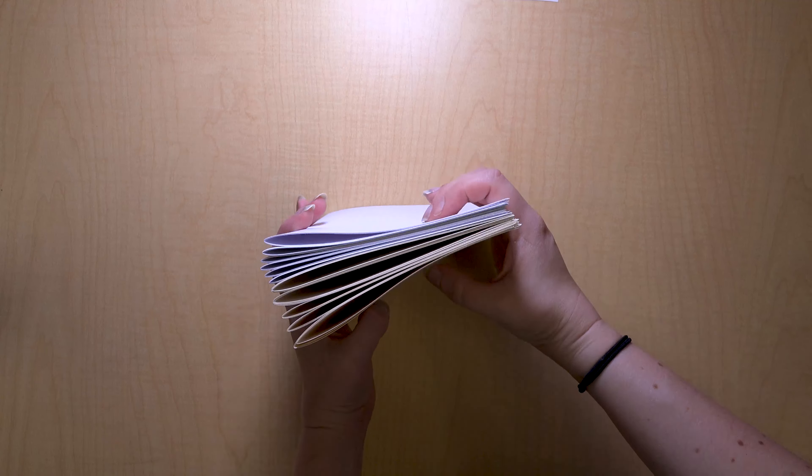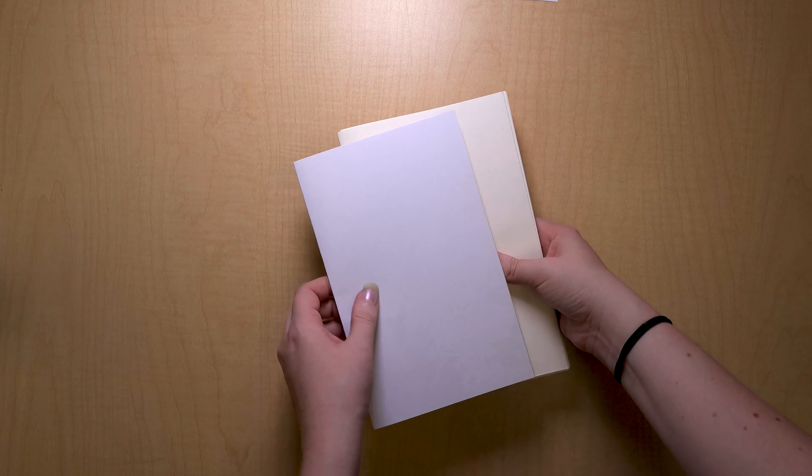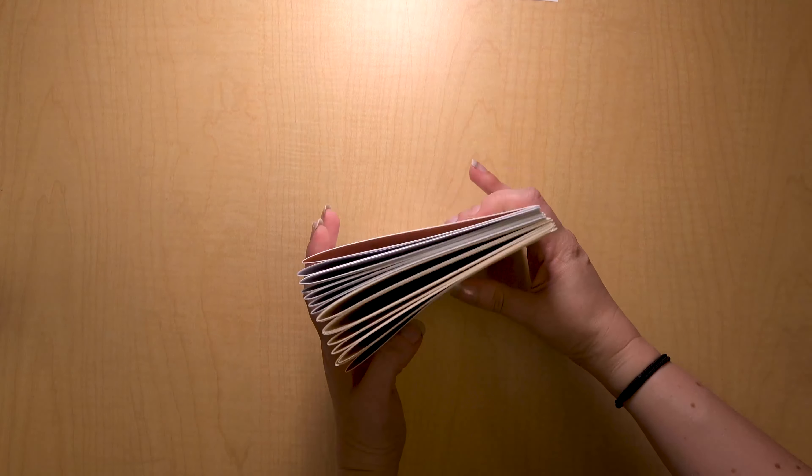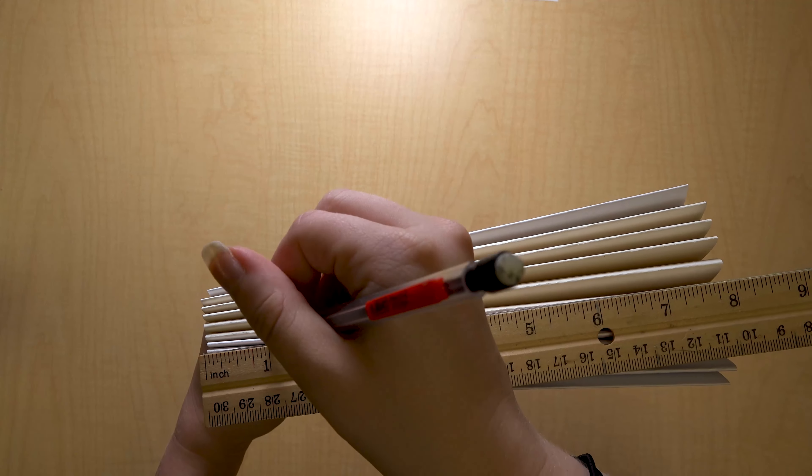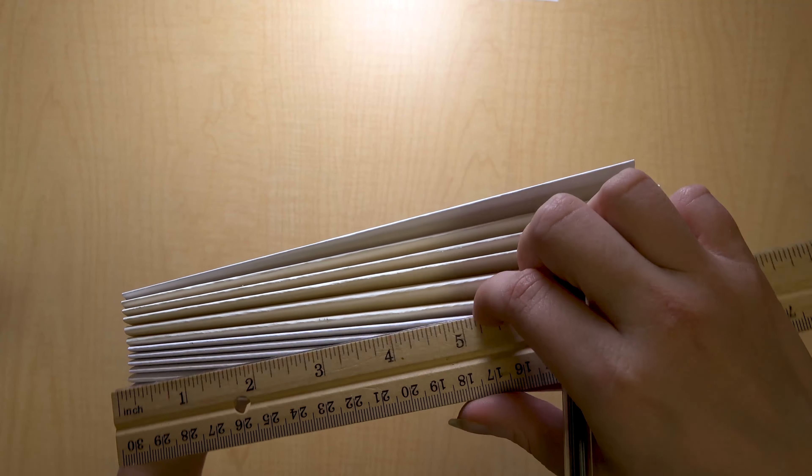Now this is probably the most time consuming part. We need to sew all of these signatures together. Stack your signatures together in a nice even pile. Put one end paper on the top and one on the bottom, like a book sandwich. Measure and draw 4 equidistant lines right down the folds. I'm drawing my lines at the 1, 3, 5, and 7 inch marks.